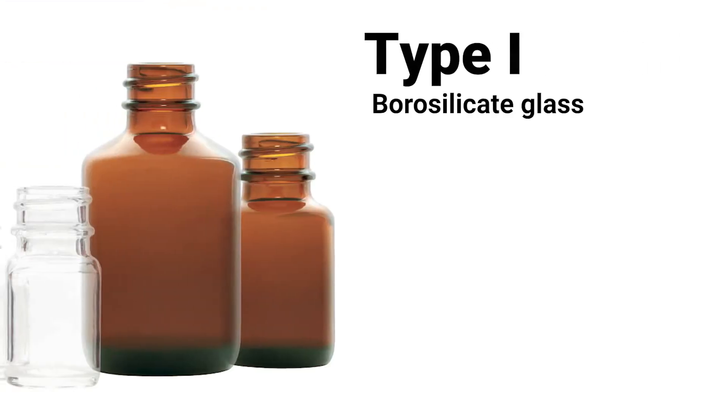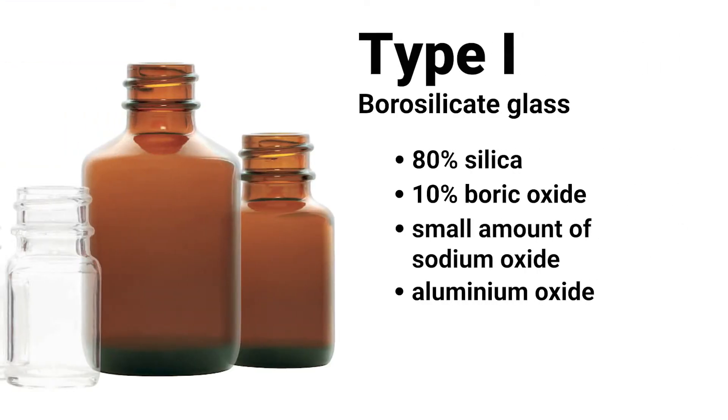Did you know that there are four types of glass containers used in the pharmaceutical industry? Their difference is based on the degree of hydraulic resistance to water attack. Type 1 glass containers — borosilicate glass — contains 80% silica, 10% boric oxide, and small amounts of sodium oxide and aluminium oxide. It is chemically inert and possesses high hydraulic resistance due to the presence of boric oxide. It has the lowest coefficient of expansion and high thermal shock properties, making it the most widely used in the pharma industry. It can also be used to contain strong acids and alkalis.